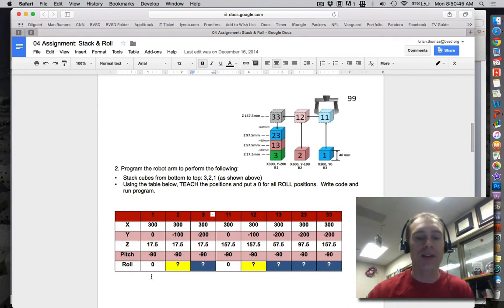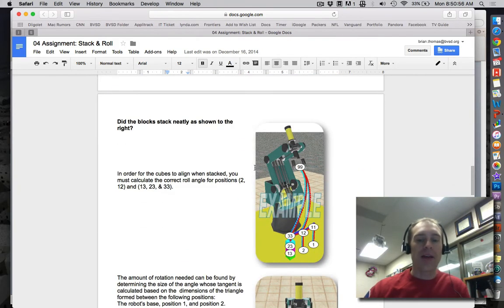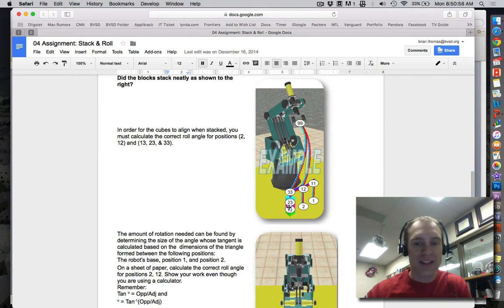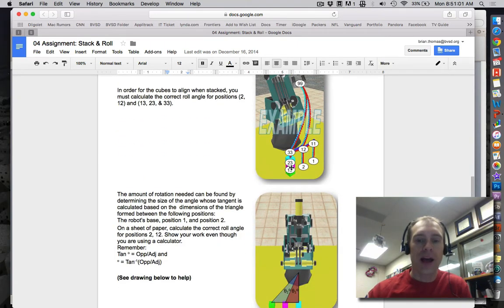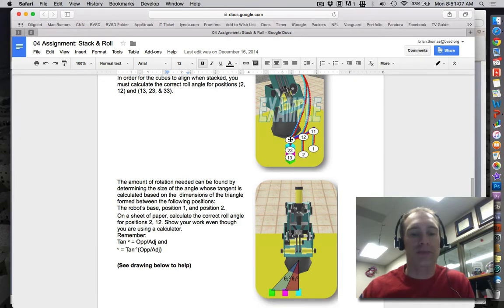And spot one and eleven, they have a roll angle of zero. So what we need to do is calculate the roll angle for two and twelve, and then the three column, three, thirteen, twenty-three, and thirty-three. And this is what it will look like. They'll all be neatly stacked. If you don't do it correct, they're going to have a slight twist as they stack up, kind of like stairs being stacked and rotated, like a spiral staircase.